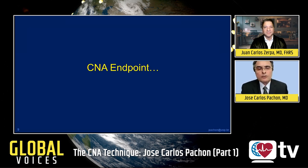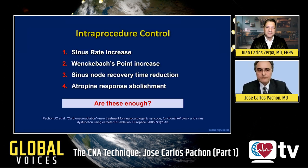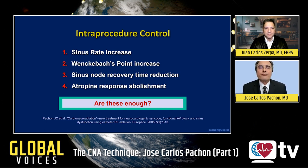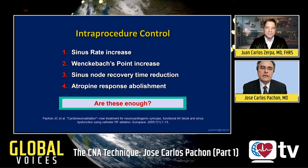Let's talk about endpoints and cardioneuroablation procedure control. At the beginning, the only way to control the procedure was to observe the sinus rate increasing progressively as the vagal effect was eliminated, as well as the increase of the Wenckebach point showing that the vagal effect over the AV node was reduced. The reduction of sinus node recovery time was also informative. We initially used abolishment of the atropine response as an endpoint.